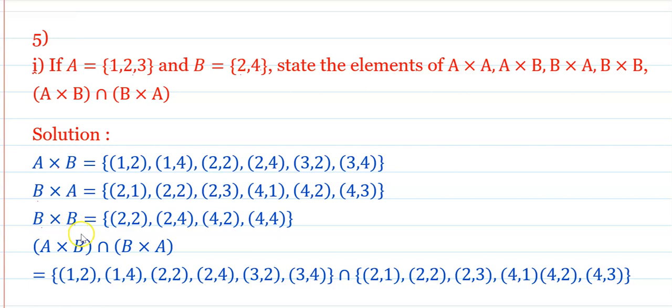Next, B cross B = {(2,2), (2,4), (4,2), (4,4)}.